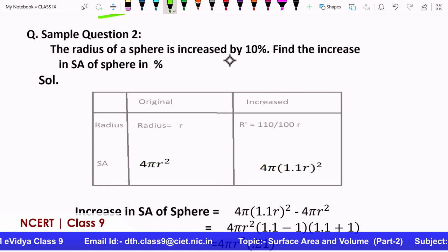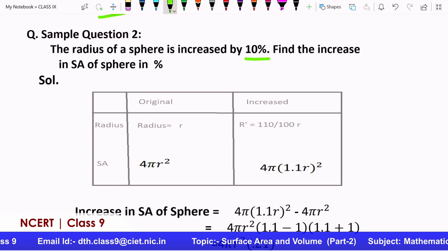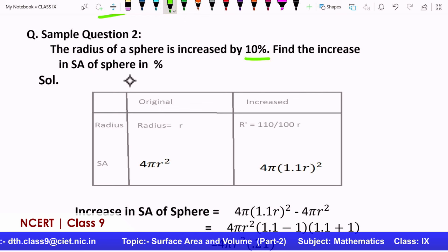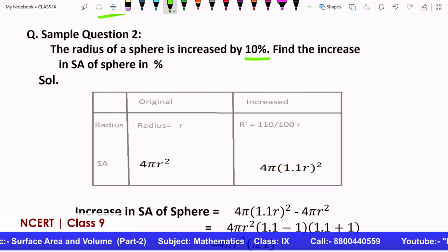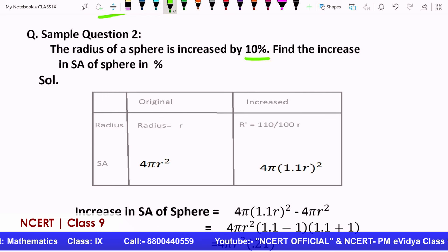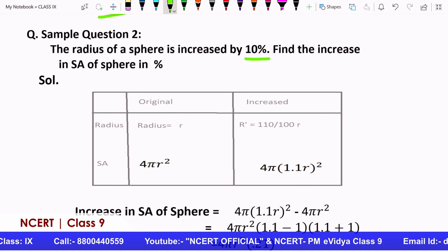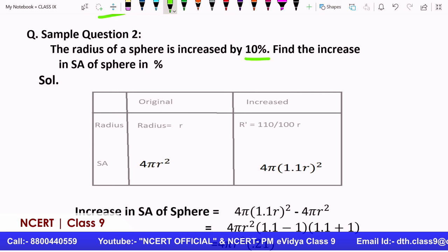The radius of a sphere is increased by 10 percent. Now you have to find the increase in the surface area. That means if the radius of a sphere is increased, obviously the surface of a sphere is increased. You have experienced this with a balloon. If you have a smaller balloon, you will pump in more air and the size will increase. The more the size increases, its surface area will also increase. So how much will it increase? You will see.